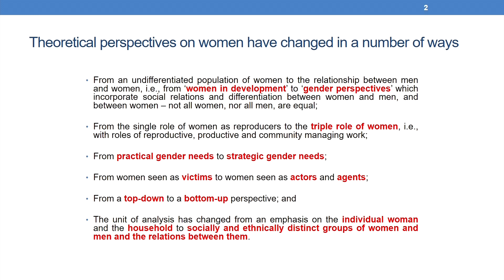Some examples of how these theoretical perspectives have changed are shown on the slide. We have moved from an undifferentiated population of women to the relationship between men and women — that is, from women in development to gender perspectives which incorporate social relations and differentiation between women and men, and between women. We have also moved from the single role of women as reproducers to the triple role of women: reproductive, productive, and community managing work.